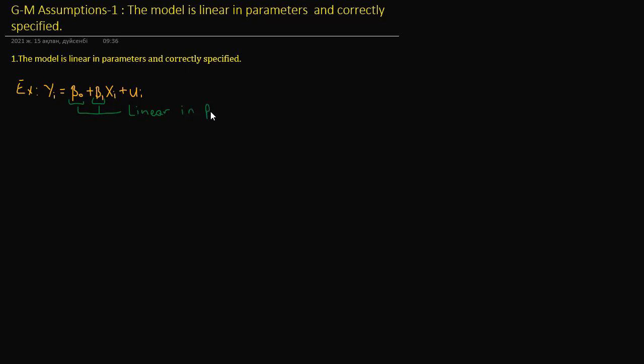In Example 1, yi equals beta0 plus beta1 times xi plus ui. Beta0 and beta1 are obviously linear in parameters, and xi is also linear in variables. This is fine—it's the most basic condition, linear in parameters and linear in variables.